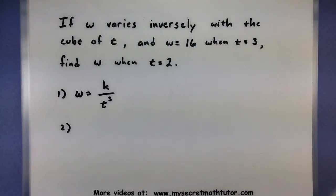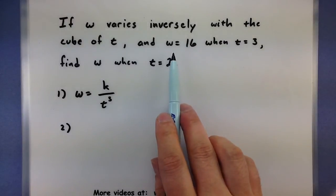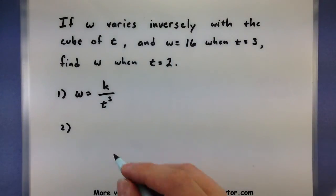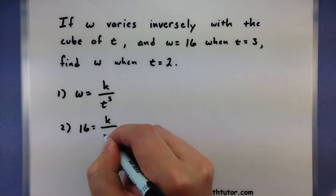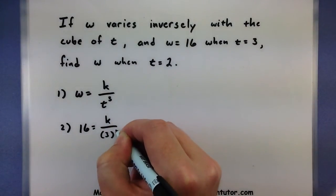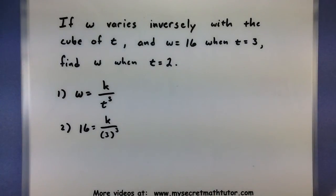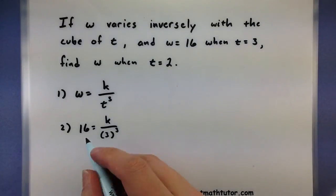Now we need to figure out what k is equal to. Let's see, w equals 16 when t equals 3. So w equals 16, and we'll have 3 here on the bottom for t. Now let's see if we can solve for k.